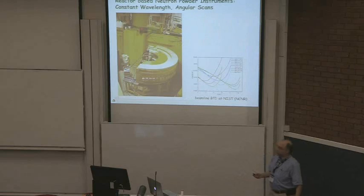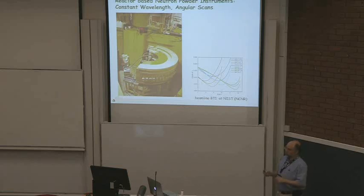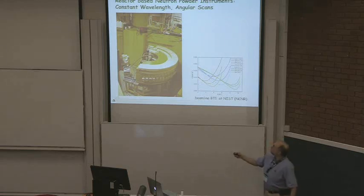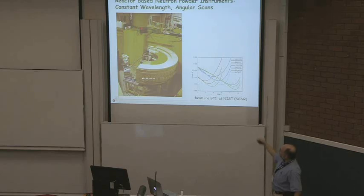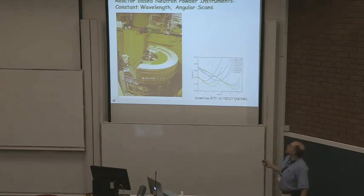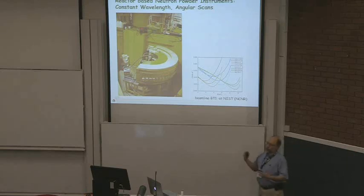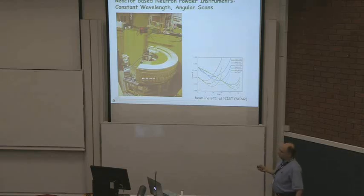A similar type of instrument at a completely different source is this neutron instrument from a nuclear reactor. The reactor sends a neutron beam which is diffracted by monochromators. The sample sits here, and 32 detectors sit around the sample. This whole banana-shaped assembly moves over a 10-degree range to collect data, typically over a period of one to 12 hours, giving you 32 overlapping scans to deal with.